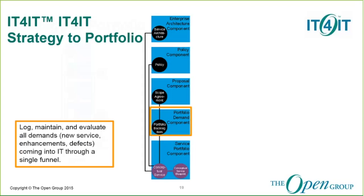Sources for portfolio demand can include project ideation, service requests, incident management, continuous improvement — sources from all over the organization. The idea is to funnel them into one function where we can have them all together in a single view. The portfolio backlog item is the key data object it manages, representing what that demand entails, who's asking for it, when they want it, and why they want it.